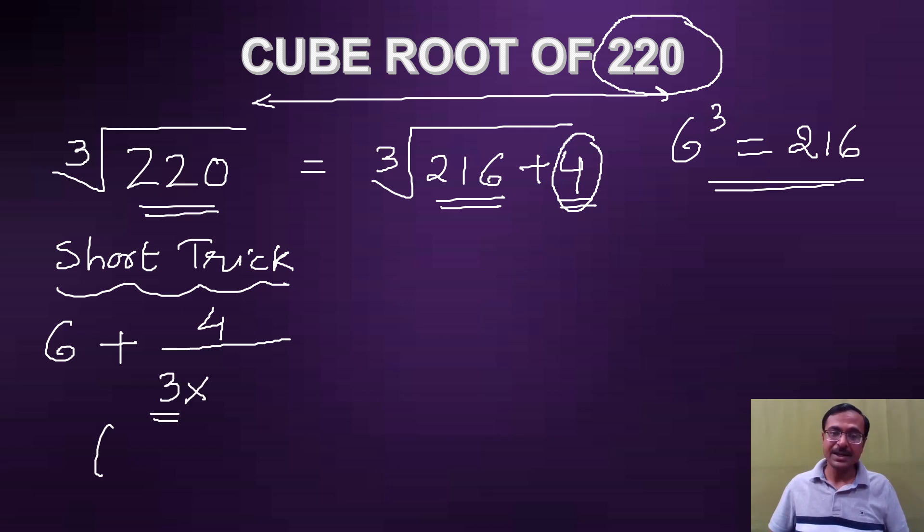Now this number 3 is a fixed number. You will not change this for every question. For every question you try with this short trick, you'll be taking 3 in the denominator - that's a fixed quantity. And the number is 6 here; that means the answer starts with 6 point.